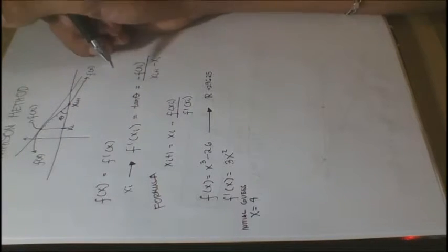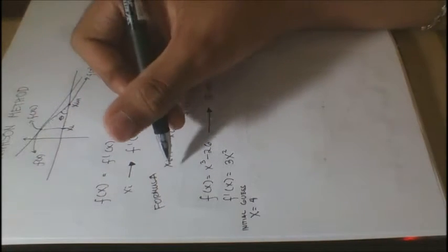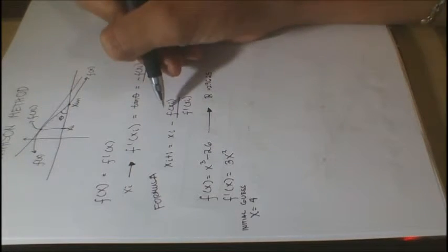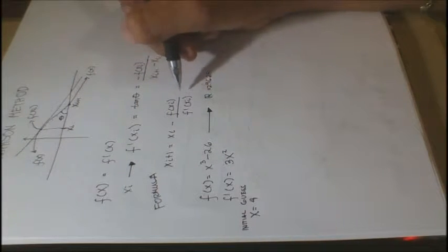Rearranging that equation, we will have our formula: xi plus 1 equals xi minus f of xi all over f prime of xi.